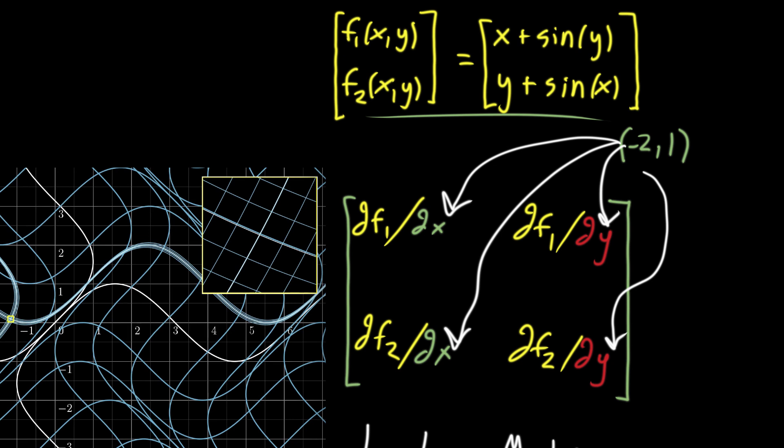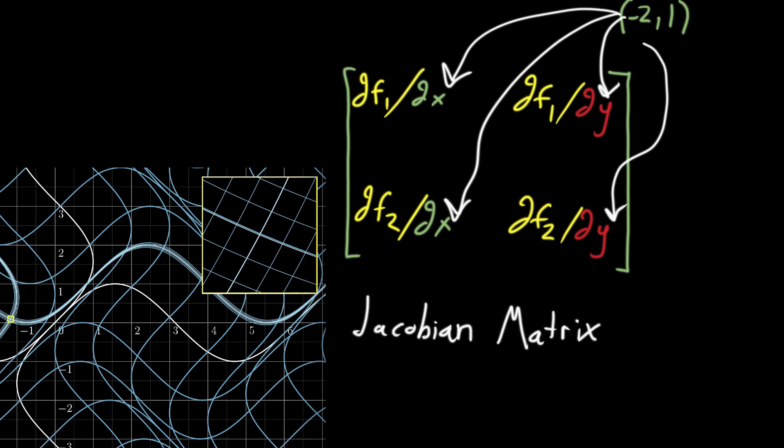And what I want to do here is basically just finish up what I was talking about by computing all of those partial derivatives. So first of all, let me just rewrite the function back on the screen so we have it in a convenient place to look at. The first component is x plus sine of y, and then y plus sine of x was the second component.